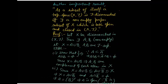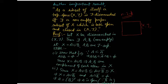Now we come to an important theorem. X is τ-disconnected if and only if there exists a non-empty proper subset of X which is both open and closed in (X, τ). Every word in this result is important: it must be non-empty, proper, and both open and closed (clopen).